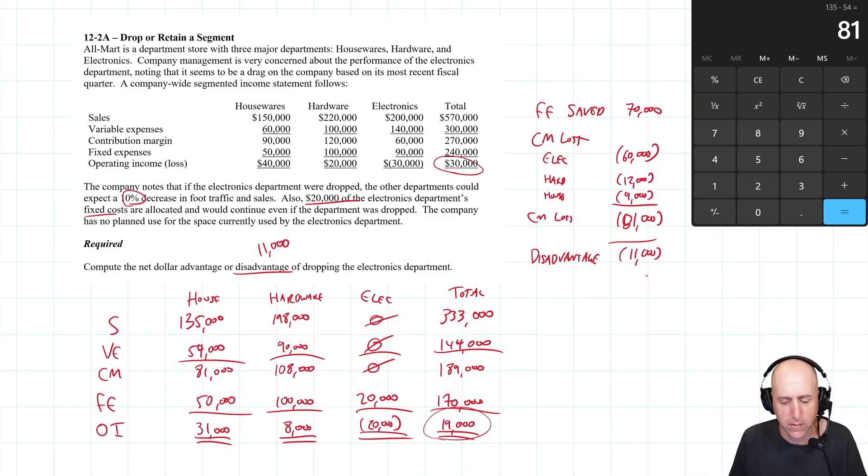So don't do it. That's the net dollar disadvantage of dropping electronics department. We did it the way I like to do it. But this way is quicker. If my student did it either way, I would accept both answers. This way is the incremental approach. And I think textbooks do tend to favor this way. I like doing it this way because that's how my brain processes it. So there you go. We've solved 12-2-A.